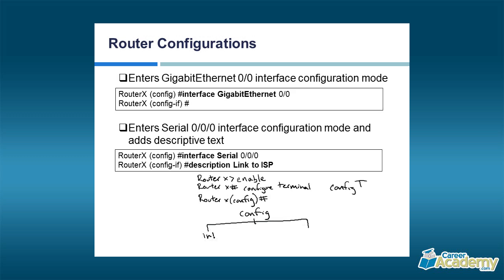Once you're in global configuration mode — called global because you're at the top of a hierarchy — you can navigate to different configuration modes. One of them is interface configuration mode. To get there, from global config, you type the interface command followed by which interface you want to get to. The prompt changes to show you went from config to interface config by displaying 'config-if' in the command line. From there, you have all the same types of commands for assigning an IP address or a description.